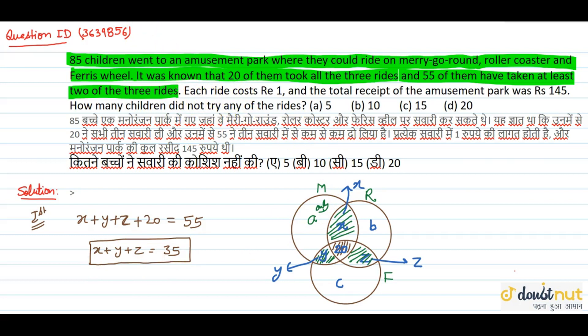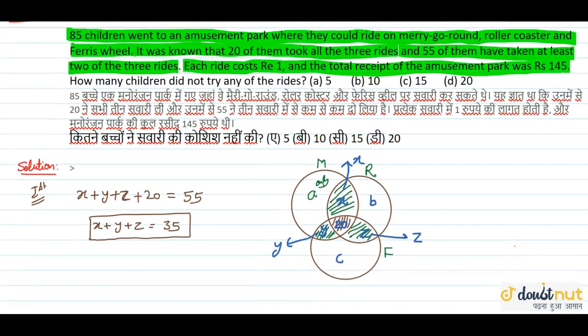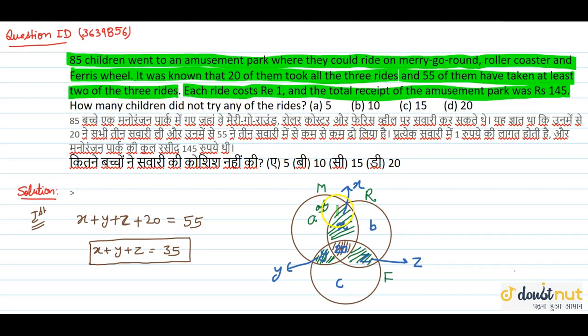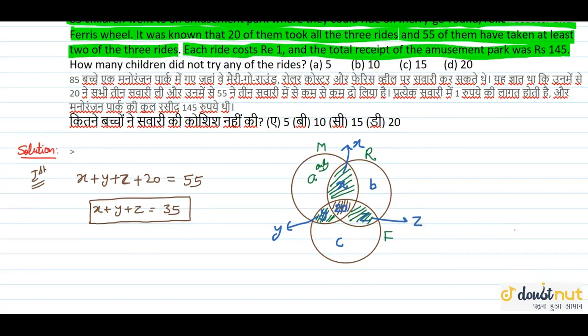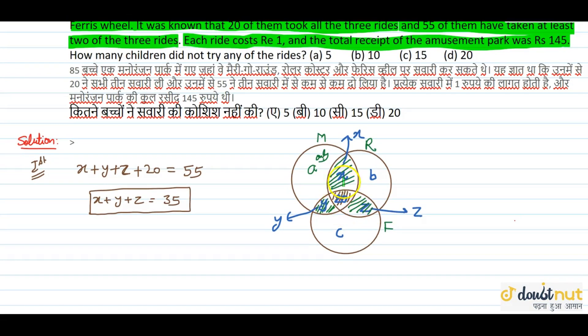Next, each ride costs 1 rupee. How much is every ride? 1 rupee. And the total receipt of the amusement park is 145 rupees.